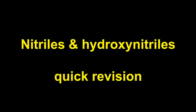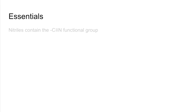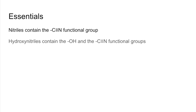Quick revision video on nitriles and hydroxynitriles. We'll start with some essentials. Nitriles contain the CN functional group, with a triple bond between the carbon and the nitrogen. Hydroxynitriles contain both the OH group (the hydroxyl group) and the CN group.